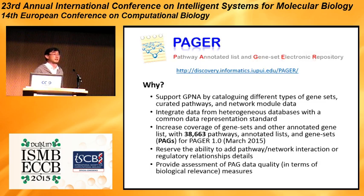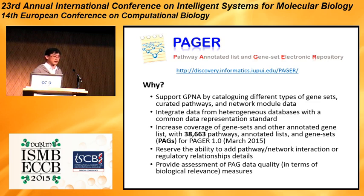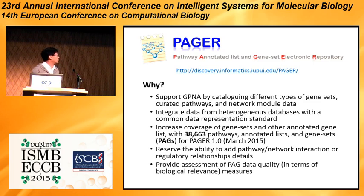Convenience is only one of the reasons why we developed this database called Pager, which is hosted online now. We really want to support GPNA analysis by providing a one-stop shop. We integrate data from different sources. Most notably, this database contains 38,000 structures that we call PEGs, representing over 150% more data than the MSigDB. We also want to preserve the ability to do systems biology later, add interaction details, and provide some sense of quality — how diverse or heterogeneous these data are in terms of biological relevance.